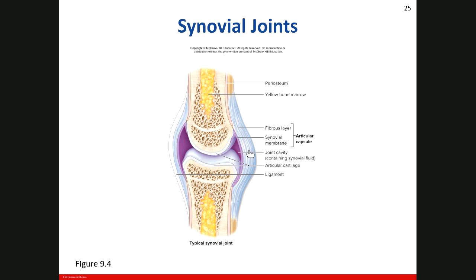Ligaments are composed of dense regular connective tissue and connect one bone to another. Their functions are to stabilize, strengthen, and reinforce most synovial joints. We have two types: intrinsic ligaments, which are thickenings of the articular capsule itself, and extrinsic ligaments, which are located outside and physically separate from the joint capsule. The specific intrinsic and extrinsic ligaments are specific to each type of joint.